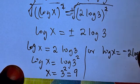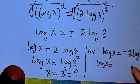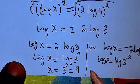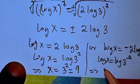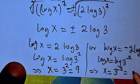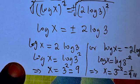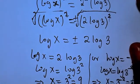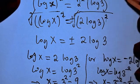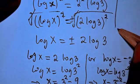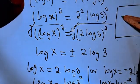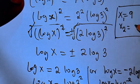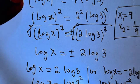For the second case, log x equals minus 2 log 3, which gives log x equals log 3 to the power of negative 2. This implies x equals 3 to the power of minus 2, which is the same as 1 over 9. So in conclusion, our two solutions are x₁ equals 9 and x₂ equals 1 over 9.